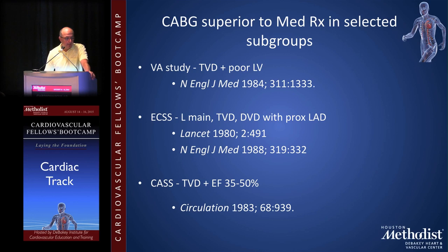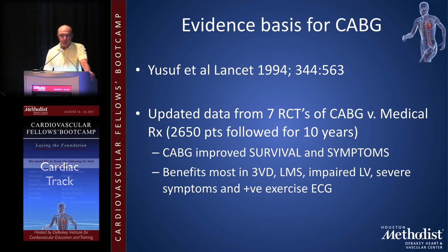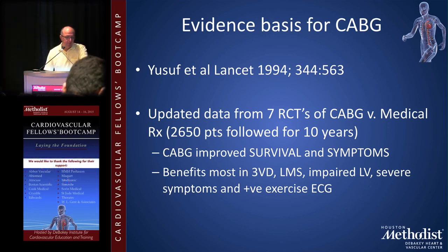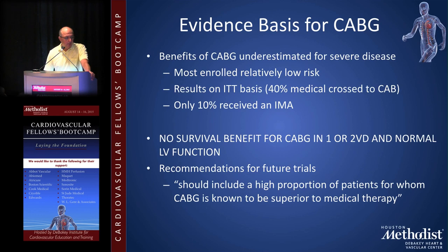There was an update in the New England Journal in 1988. The Coronary Artery Surgery Study showed that patients with triple-vessel disease and impaired left ventricular function did better with CABG versus medical therapy, published in Circulation in 1983. In 1994, a meta-analysis in the Lancet updated data from seven randomized controlled trials comparing CABG with medical therapy — more than 2,500 patients followed over ten years — showing that CABG improved survival and symptoms, with benefits most pronounced in patients with triple-vessel disease, left main stenosis, poor LV function, and severe symptoms.